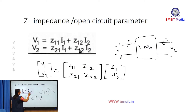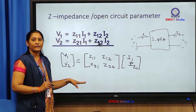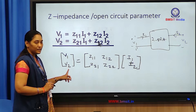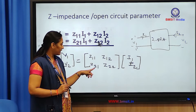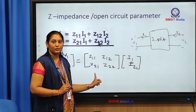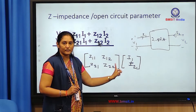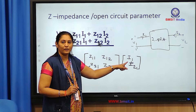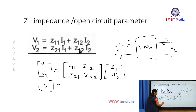We write V1 = Z11·I1 + Z12·I2 and V2 = Z21·I1 + Z22·I2. This can be written in matrix form as [V1; V2] = [Z11 Z12; Z21 Z22] × [I1; I2], or simply V = Z·I in matrix notation.